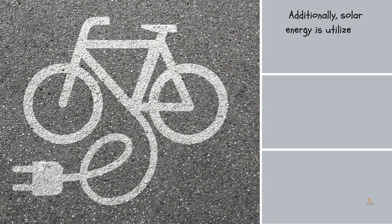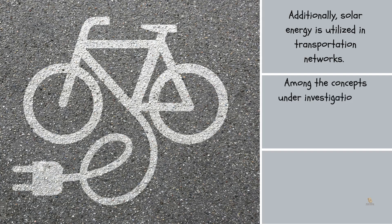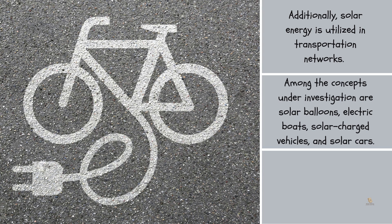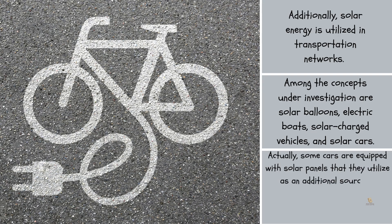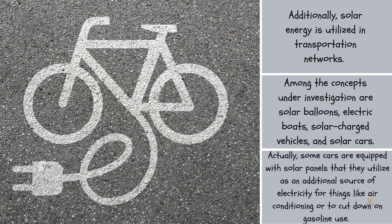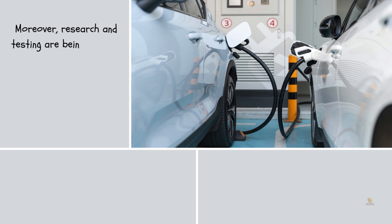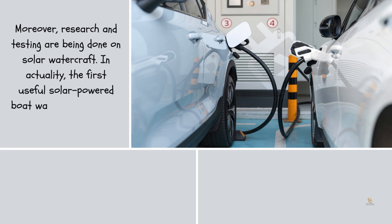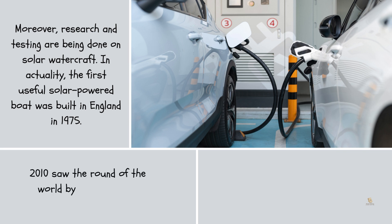Additionally, solar energy is utilized in transportation networks. Among the concepts under investigation are solar balloons, electric boats, solar-charged vehicles, and solar cars. Some cars are equipped with solar panels used as an additional source of electricity for things like air conditioning or to cut down on gasoline use. Research and testing are also being done on solar watercraft. The first useful solar-powered boat was built in England in 1975, and in 2010 the first ship powered only by solar energy circumnavigated the world.